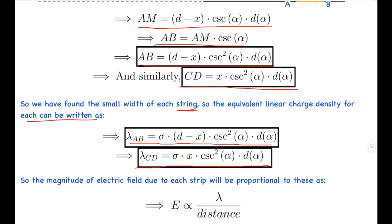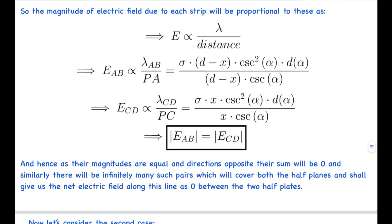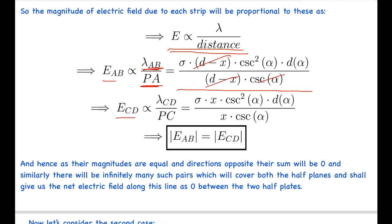The magnitude of the electric field due to each infinitely long strip is proportional to lambda over distance — just like an infinite wire with charge density lambda gives E = lambda/(2πε₀r) at distance r. Substituting the values: E_AB = lambda_AB / PA = sigma(d−x)cosec²(alpha)d-alpha / [(d−x)cosec(alpha)]. Here (d−x) cancels and one cosec(alpha) cancels. Similarly for CD, x cancels and one cosec(alpha) cancels. These two quantities are exactly the same.